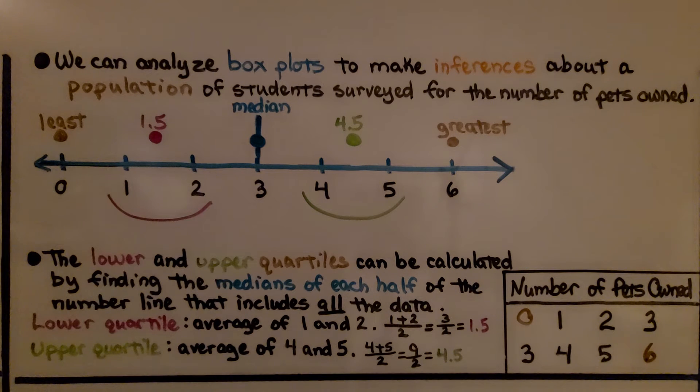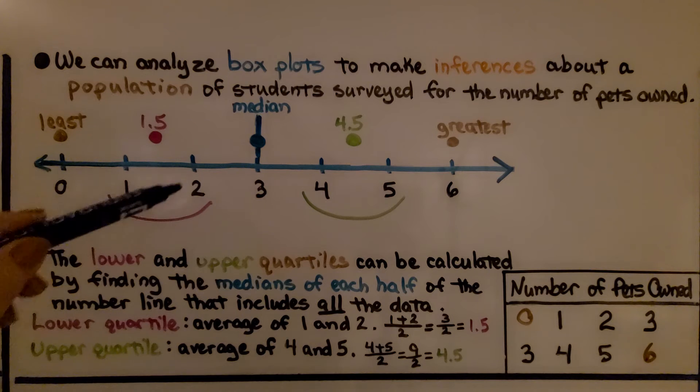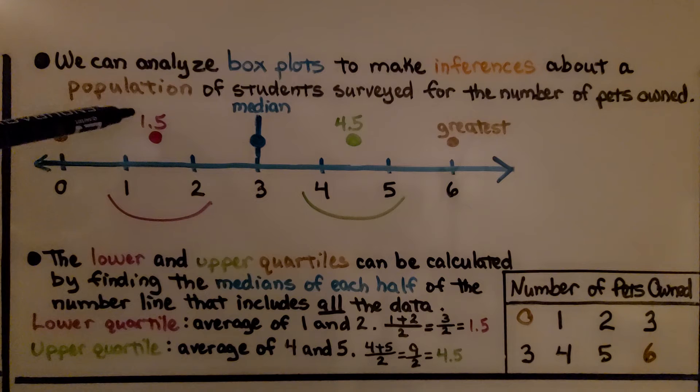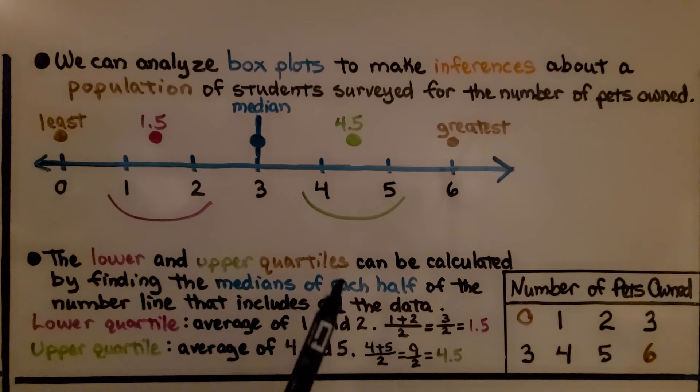That's the median. Now, for the lower quartile, we find the average of 1 and 2, which is 1.5. So that is our lower quartile. And for the upper quartile, it's going to be an average of 4 and 5, which is 4.5.